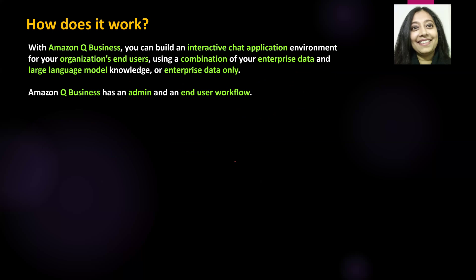Let us see how Amazon Q Business works. With Amazon Q Business, you can create an interactive chat application environment for your organization's end users. To do this, you could use a combination of enterprise data as well as large language model knowledge. If you don't want to use the LLM — some organizations are skeptical about that — you could simply use enterprise data as well. Amazon Q Business has both an admin workflow and an end user workflow.